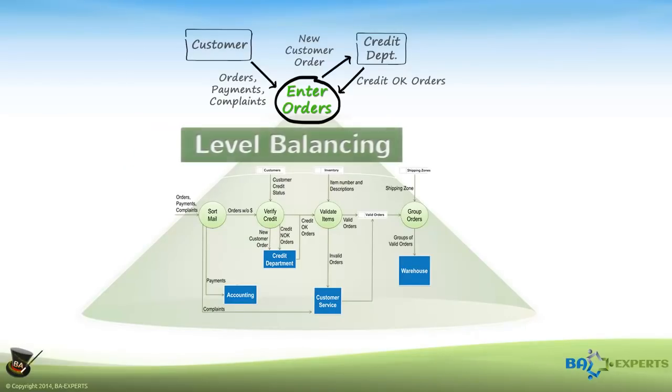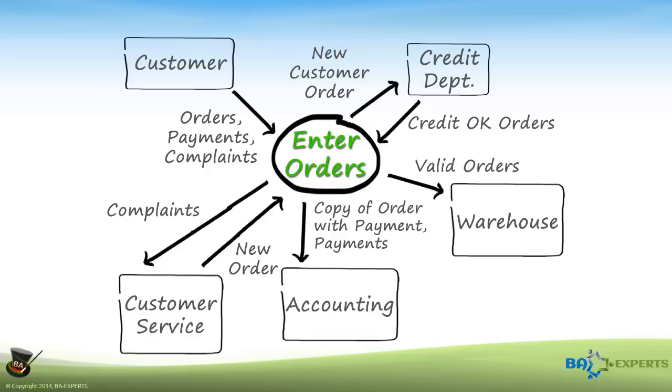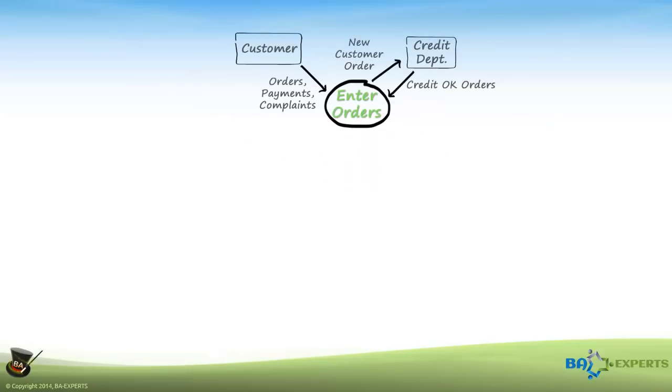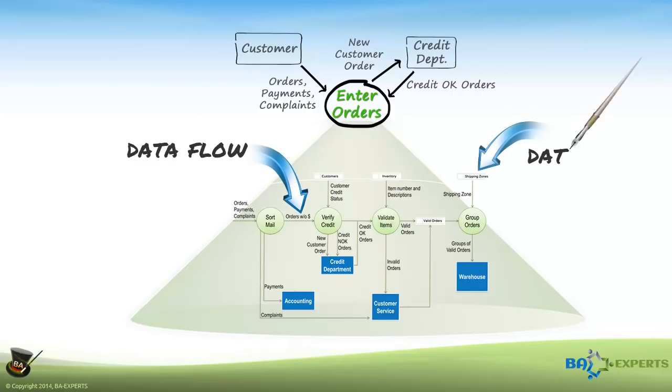A completely balanced or leveled DFD starts at the top with a context diagram consisting of one or more processes that are in scope for your project and all external entities with which those processes exchange data. Each of those Level 1 processes explodes to a Level 2 data flow diagram depicting the detailed processes inside the Level 1 process, with all internal data flows and data stores.